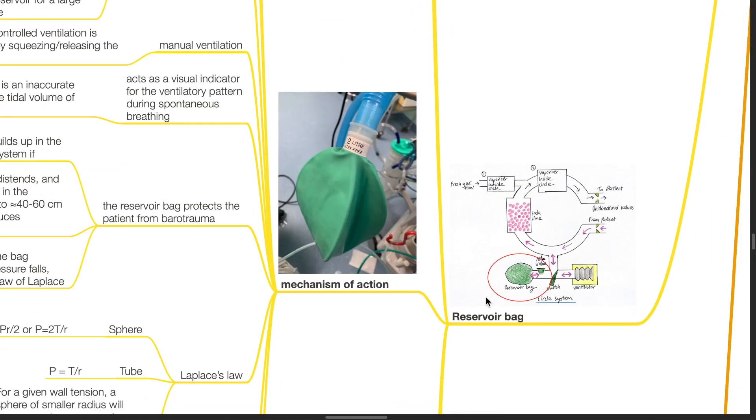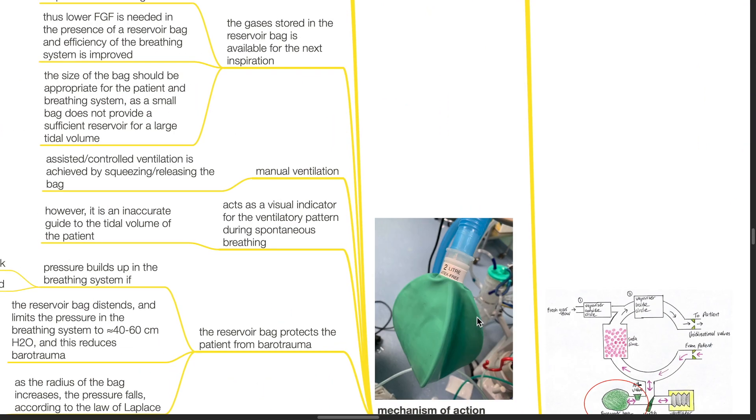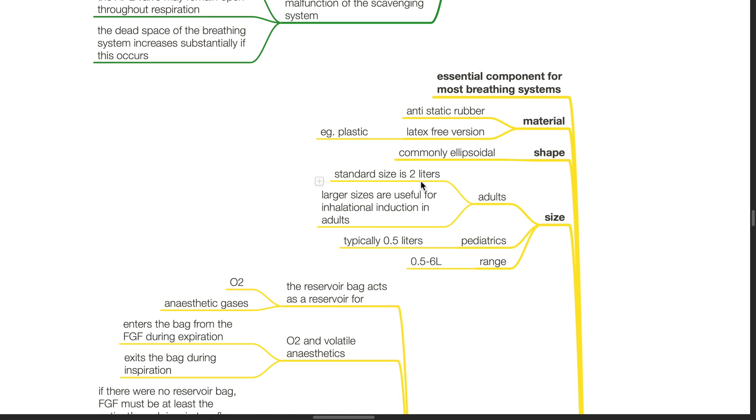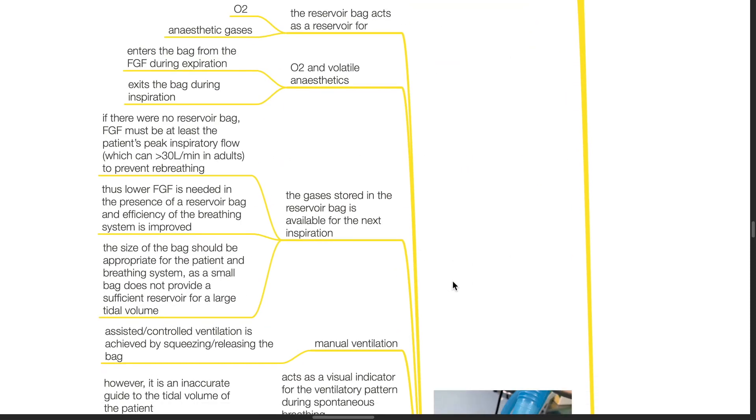Next we move on to the reservoir bag. It is an essential component for most breathing systems. It is made of anti-static rubber or plastic which is latex-free. It is commonly ellipsoidal in shape. Standard adult size is 2 liters. Larger sizes are useful for inhalational induction in adults. Pediatric size is typically 0.5 liters. The range of sizes is 0.5 to 6 liters.